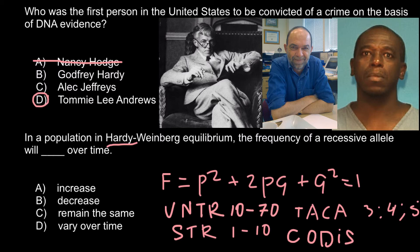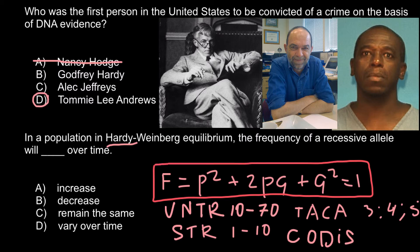In a population in Hardy-Weinberg equilibrium, the frequency of the recessive allele will — and you have to choose: A) increase, B) decrease, C) remain the same, or D) vary over time. The correct answer is expressed in the Hardy-Weinberg formula itself. The hint is in the question — the word 'equilibrium' tells you that all three genotypes — homozygous dominant, heterozygous, and homozygous recessive — remain stable over time.